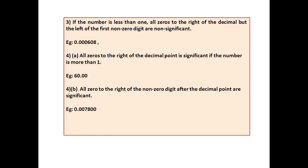Rule number 3: If any number is less than 1, all zeros to the right of the decimal but the left of the first non-zero digit are non-significant. For example, in 0.000608, the three zeros after the decimal point are non-significant. After 6, before 8, there is another zero that is a significant digit.